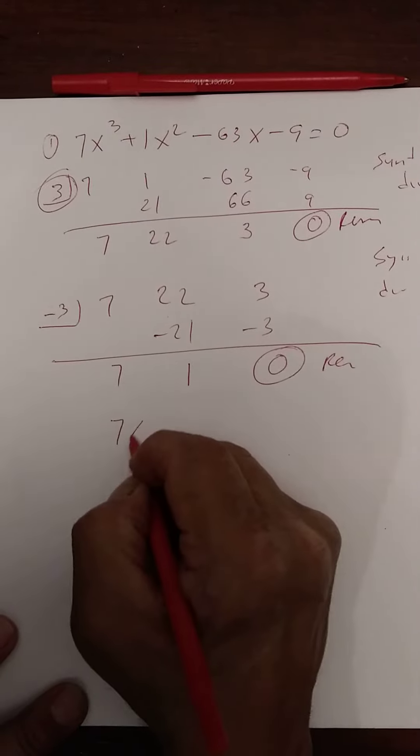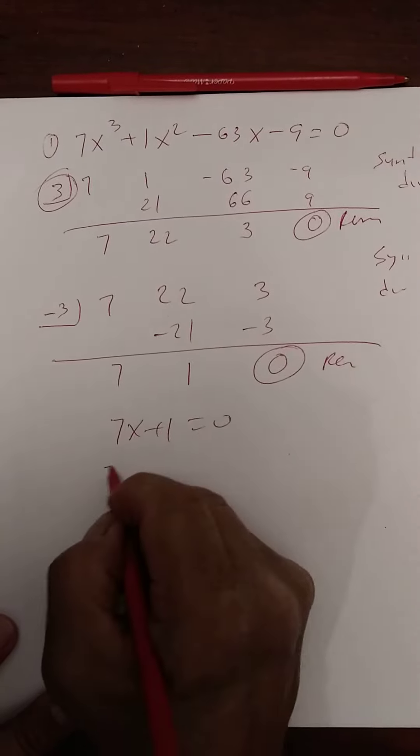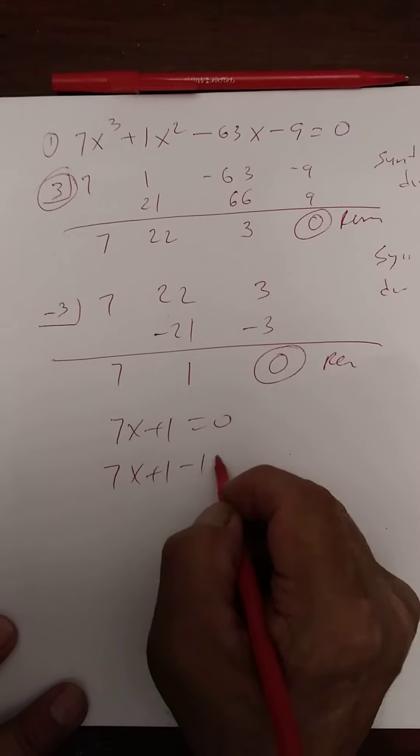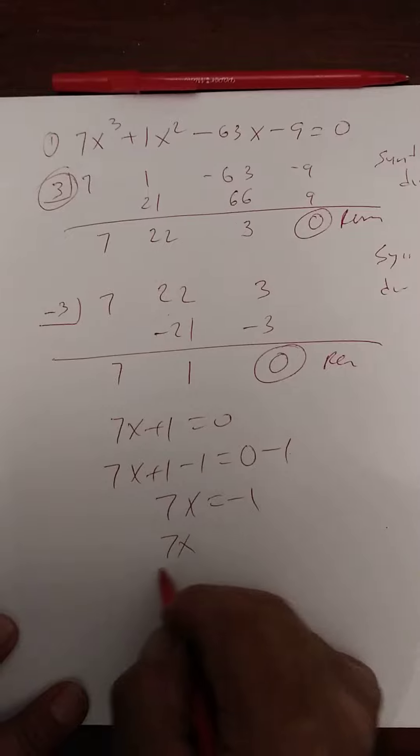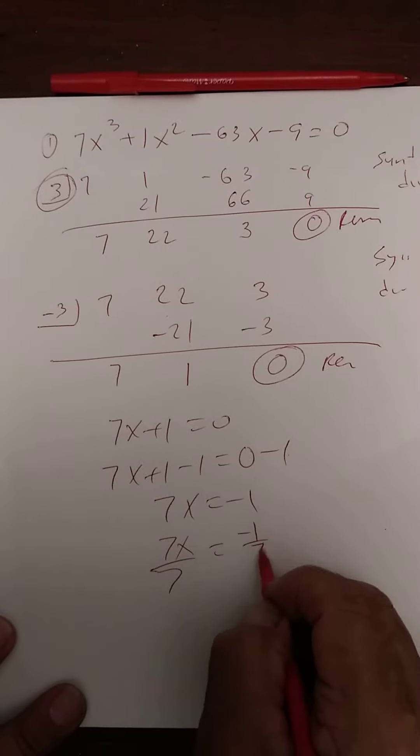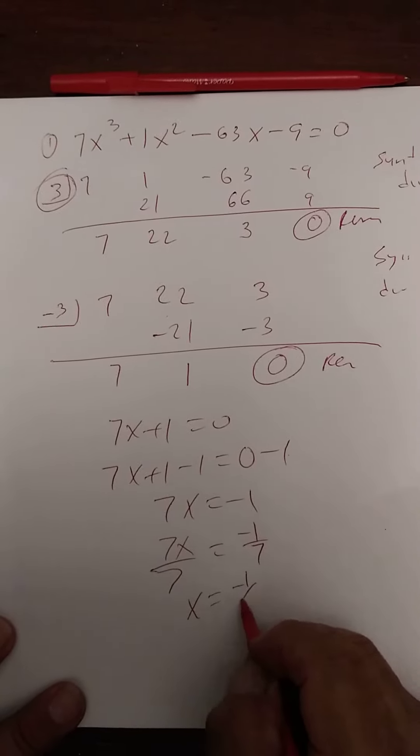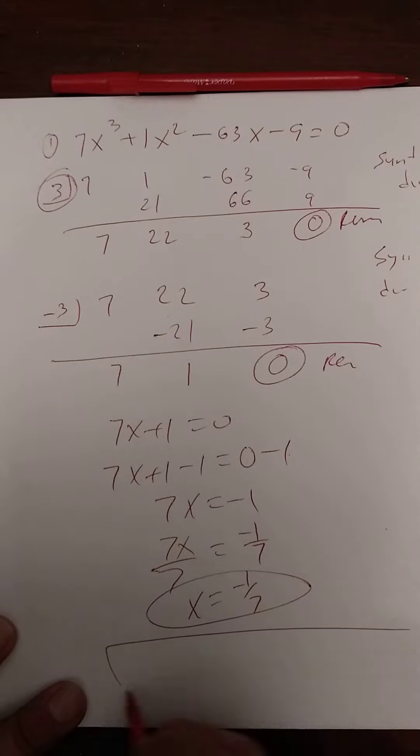So now we have 7x + 1 = 0. 7x + 1 minus 1 equals 0 minus 1. 7x = -1, divided by 7, so x is -1/7.